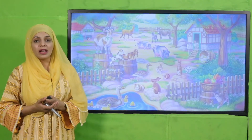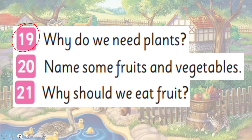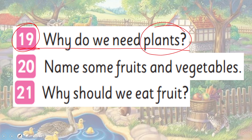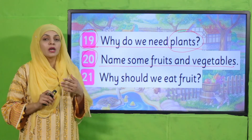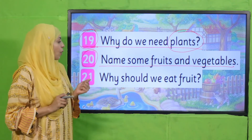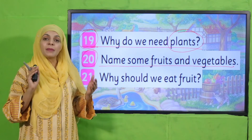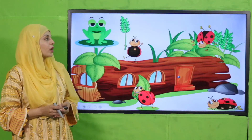Now is the time for evaluation. Listen to the questions very carefully and then answer. Question 19: Why do we need plants? We need them for food, shelter, and shade. Question 20: Name some fruits and vegetables. Fruits: apple, banana, pomegranate, mango. Vegetables: ladyfinger, brinjal, potatoes, radish, bitter gourd. Why should we eat fruit? Because they keep us healthy and save us from diseases.